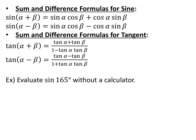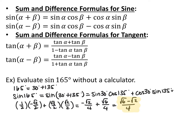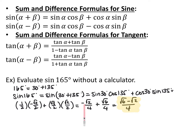Try evaluating sine of 165° without a calculator using the sine sum or difference formulas. I split 165° into 30° and 135°. 30° is the same as π/6, and 135° is the same as 3π/4. So sine of 165° equals sine of 30° plus 135°, which by the sine sum formula is: sine 30° times cosine 135° plus cosine 30° times sine 135°. Sine 30° is 1/2, cosine 135° is −√2/2, cosine 30° is √3/2, and sine 135° is √2/2. This gives −√2/4 plus √6/4, or (√6 − √2)/4.